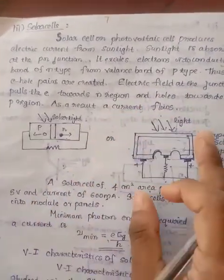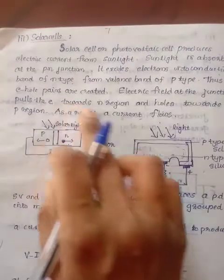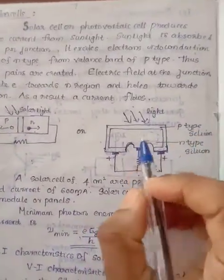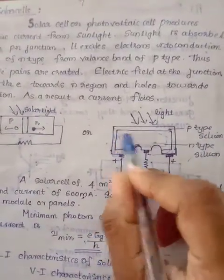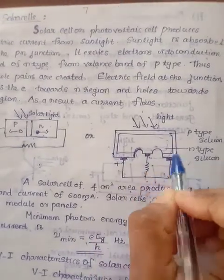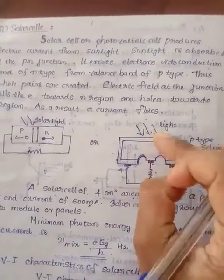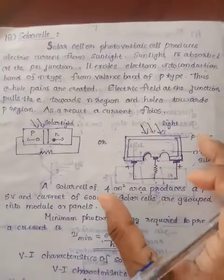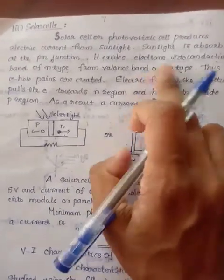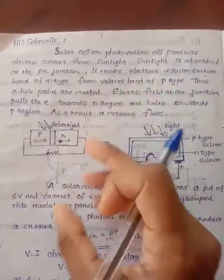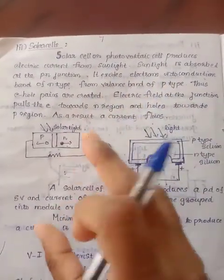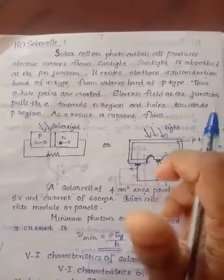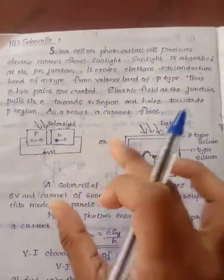This is a solar cell — this is a diagram for the solar cell. This is the N-type material. When the sunlight is absorbed at the PN junction, it will excite electrons from the valence band to the conduction band. Electron holes are created and this will produce some current. That is the working of the solar cell.